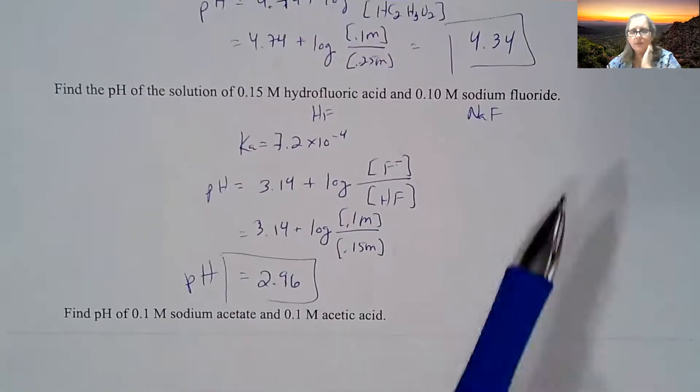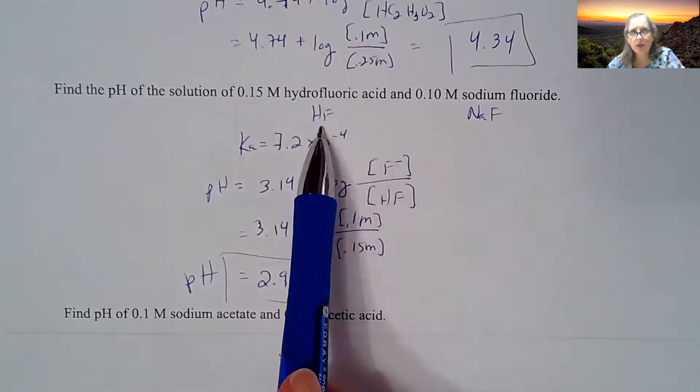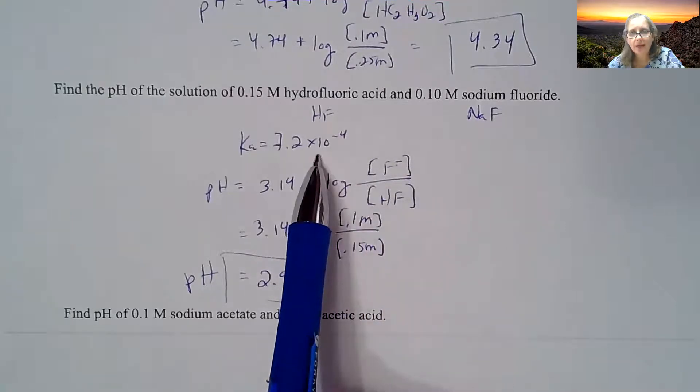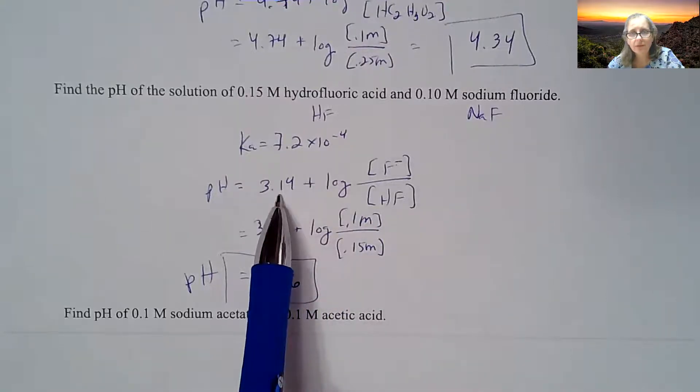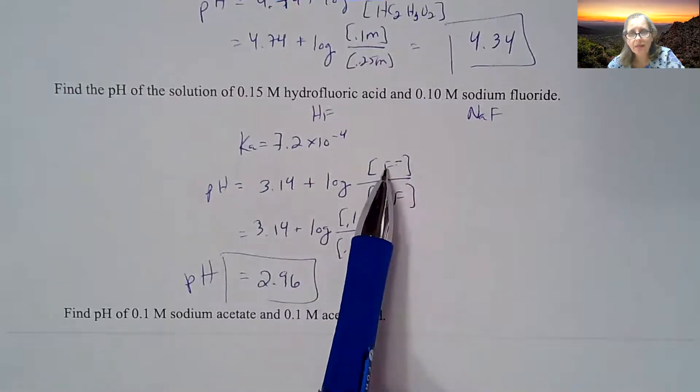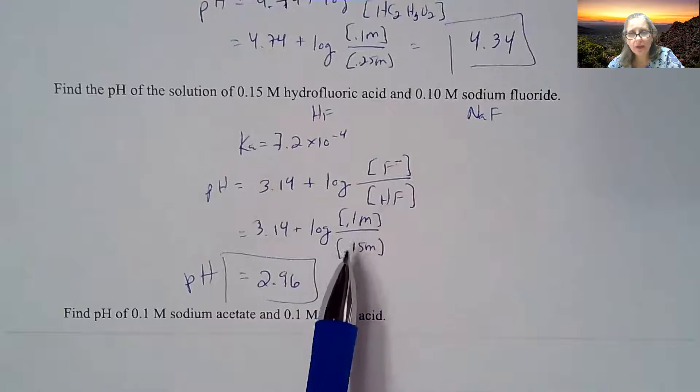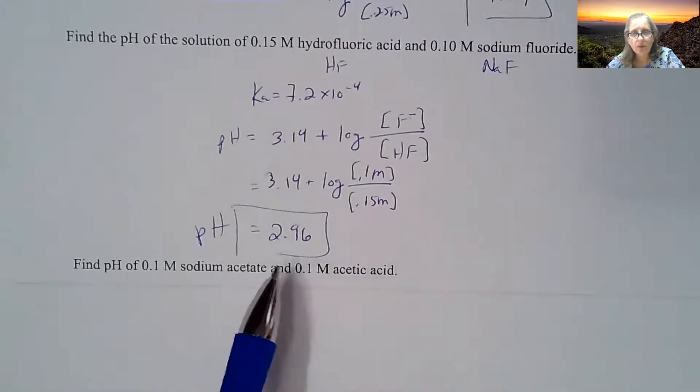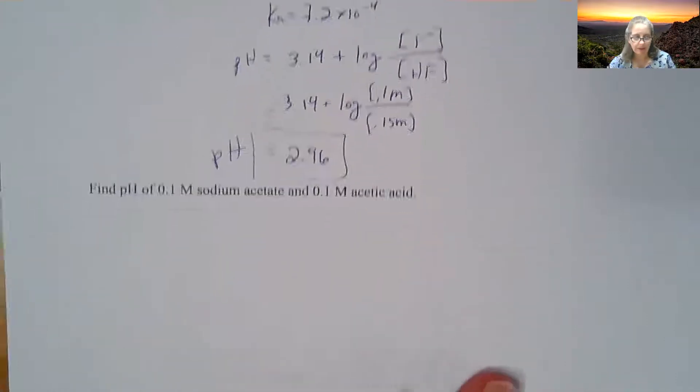Then the other example here is hydrofluoric acid, HF, and sodium fluoride, NaF. If you look up HF's Ka value, it's 7.2 times 10^-4. You take the negative log of that, and that is 3.14. You're taking F- the fluoride over the HF, hydrofluoric acid. It's 0.1 over 0.15, and you end up with a pH of 2.96.